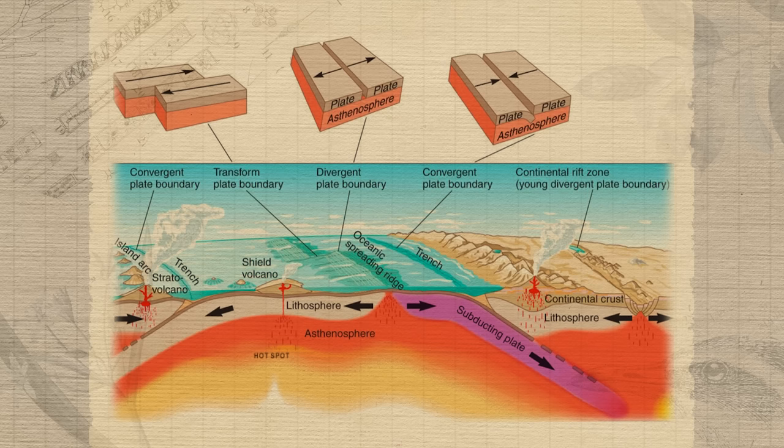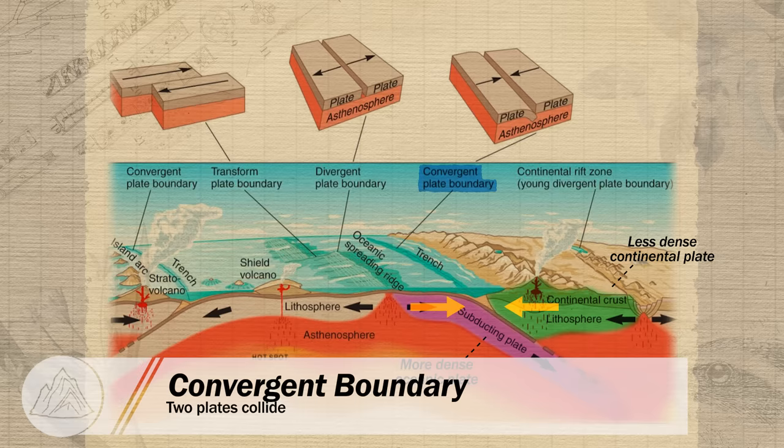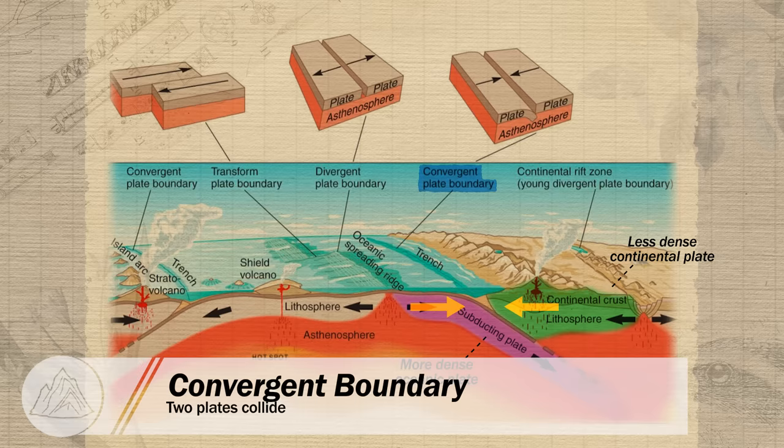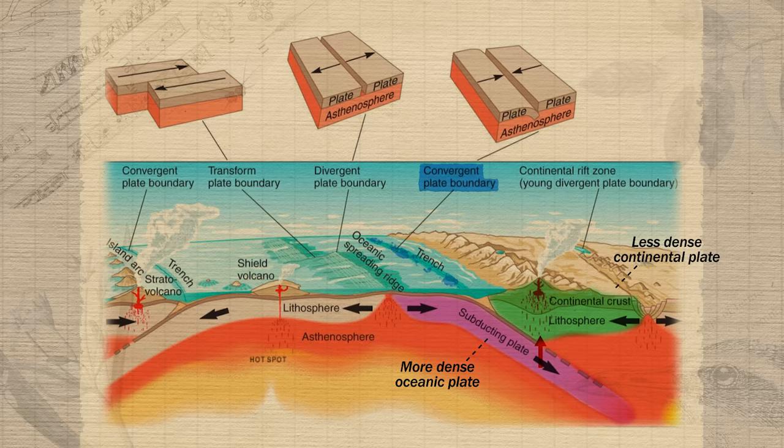If we look at the plate on the right of this divergent boundary, the magma is going to force it towards a continental plate. This causes a convergent plate boundary where two plates are colliding. Because it's more dense, the oceanic plate is subducted or forced beneath the continental plate. This subduction forces magma up through the lithosphere, leading to volcanic mountain ranges forming along the coast. These convergent boundaries can also form trenches right at the point where one plate slides beneath the other.